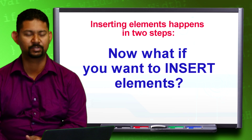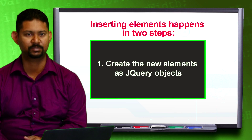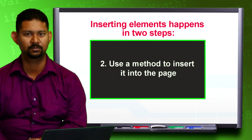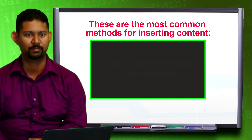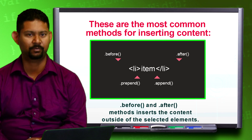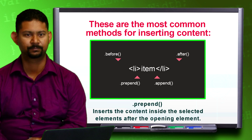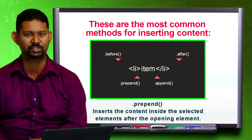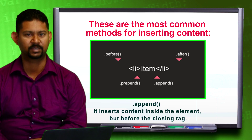Now what if you want to insert elements? Inserting elements happens in two steps. First, create the new elements as jQuery objects. Second, use a method to insert into the page. The most common methods for inserting content are: .before and .after — they insert the content outside of the selected elements. .prepend — inserts content inside the selected elements after the opening element, which you can think of as the first child element. .append — does the opposite, inserting content inside the element but before the closing tag, making it the last child element.